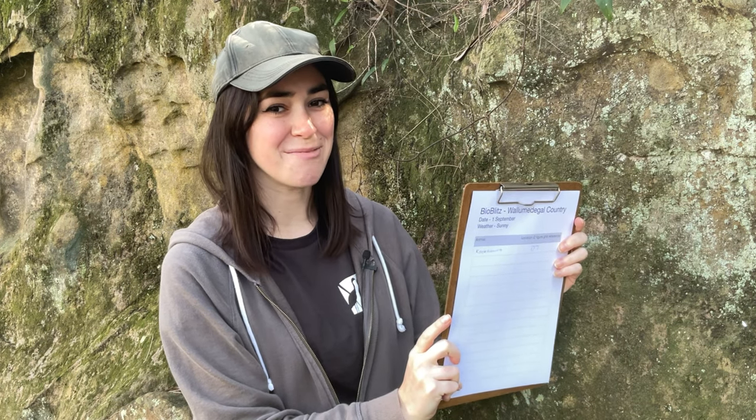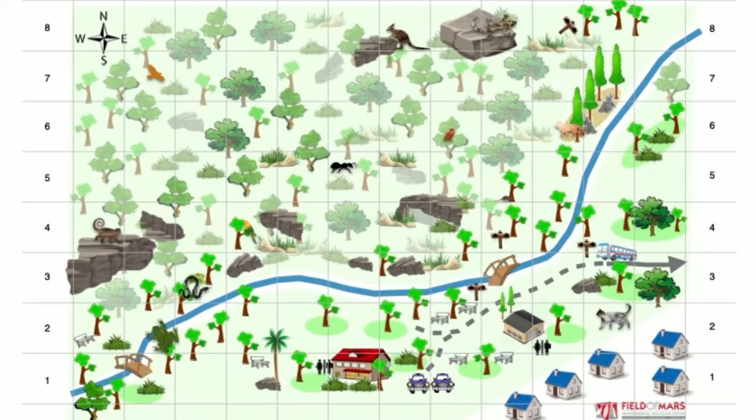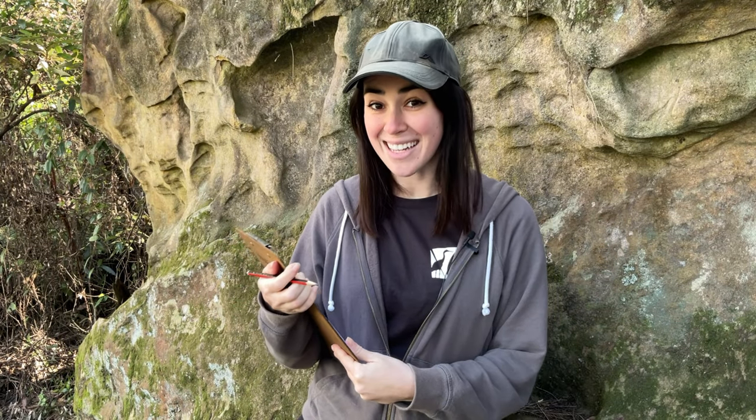Blitz time! Use the map to find as many animals as you can. But it's not going to be easy — some animals are camouflaged. Stop this video so that you can conduct your bio blitz. How did you go? I'm so excited. I recorded 12 animals.